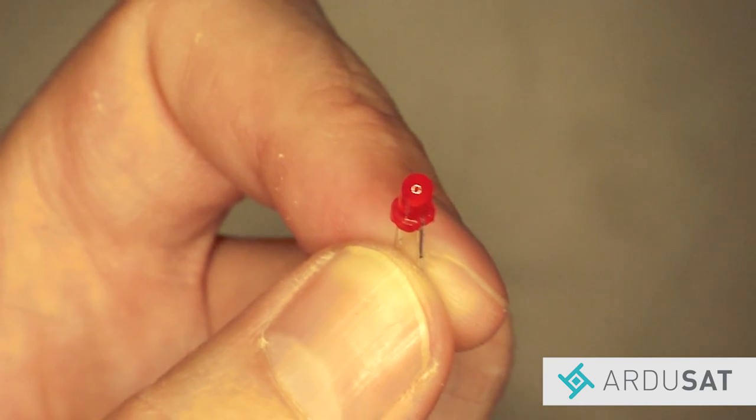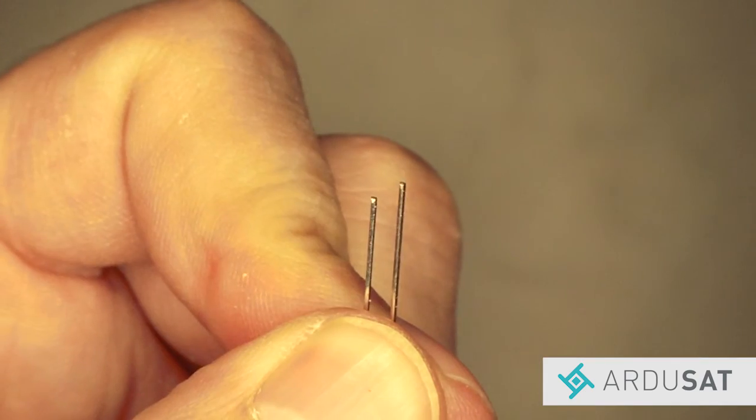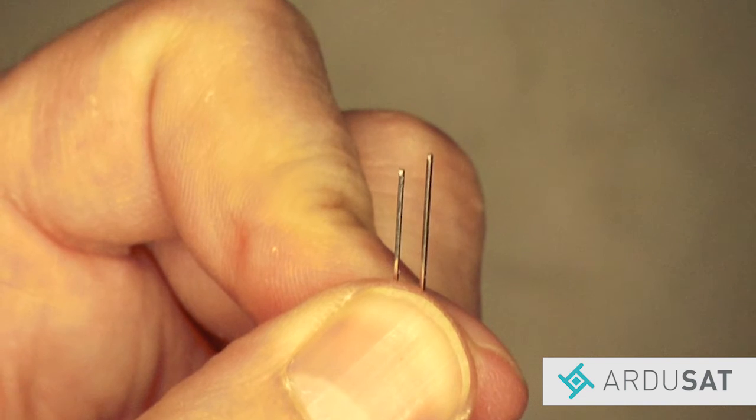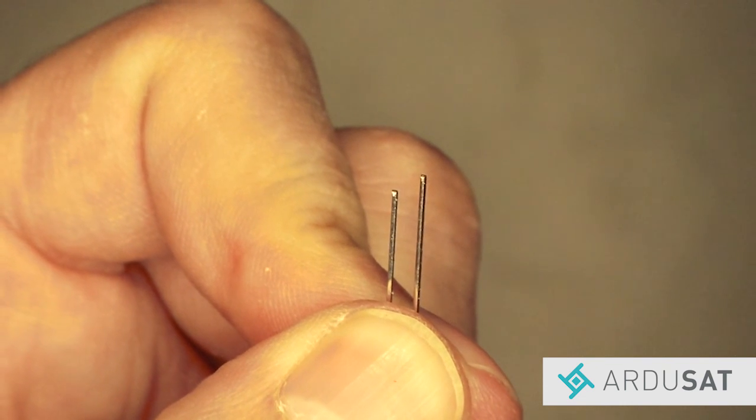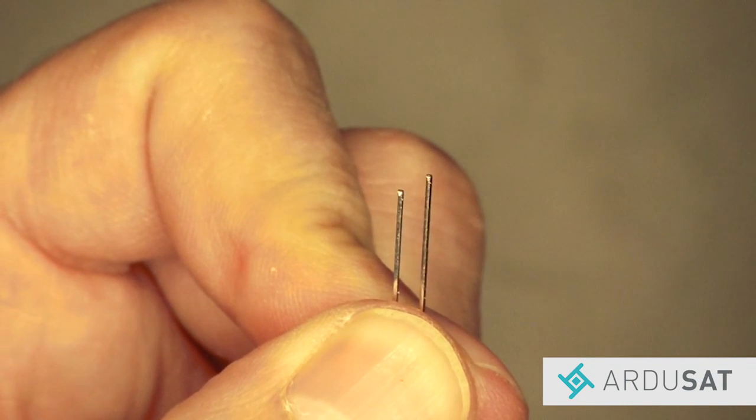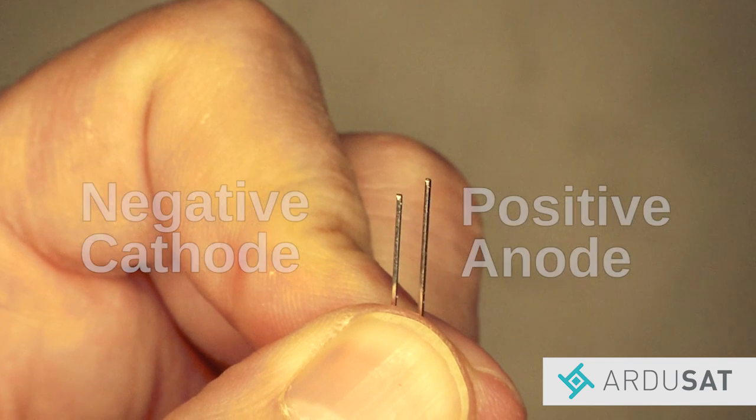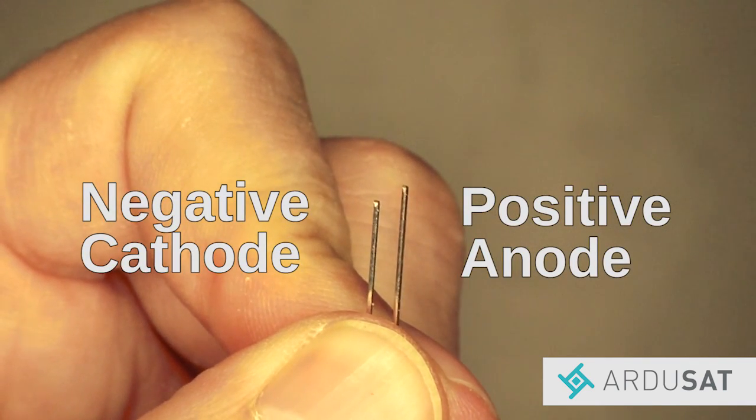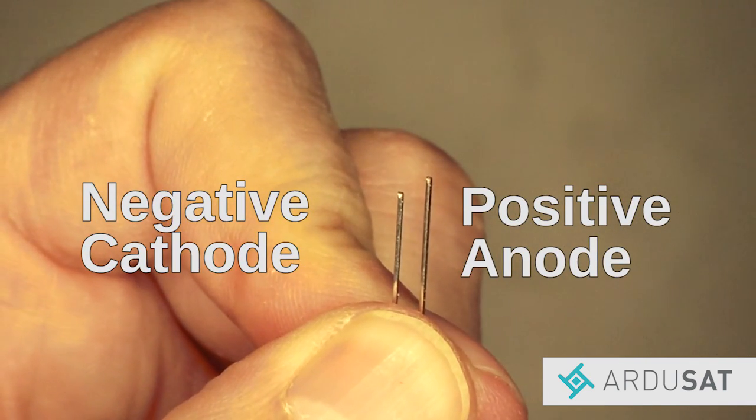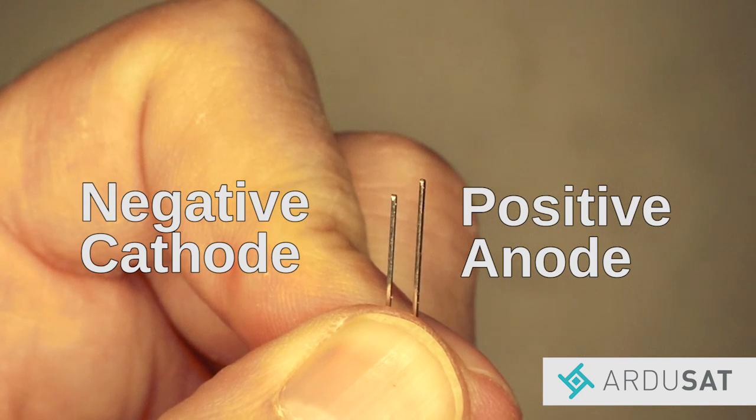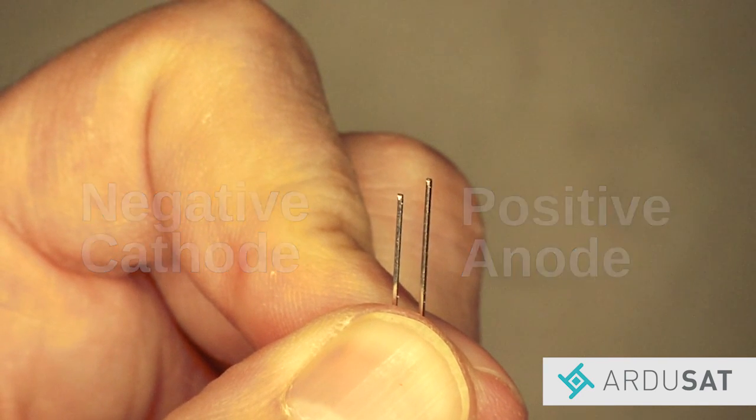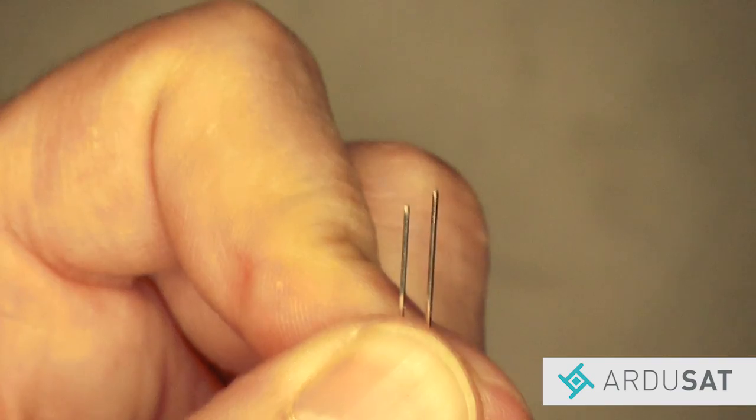A light emitting diode or LED is a small light. There are two legs that come out of the LED, a longer leg and a shorter leg. It is important to know which is which because the longer leg or anode needs to be connected to power and the shorter leg or cathode needs to be connected to the ground. If this is backwards the LED could burn out.